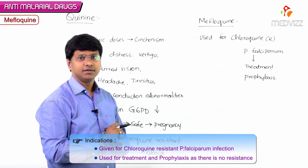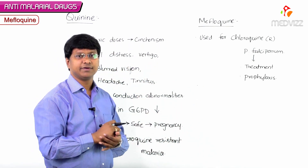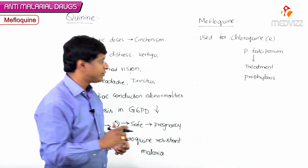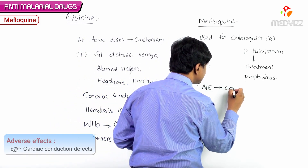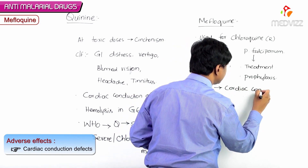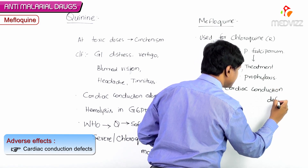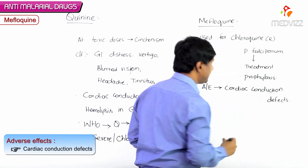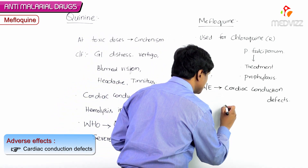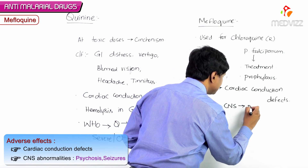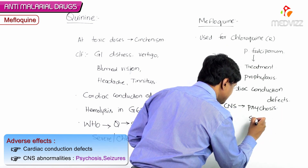Next, the adverse effects associated with mefloquine — mefloquine can cause cardiac conduction defects and it is also associated with certain CNS adverse effects.